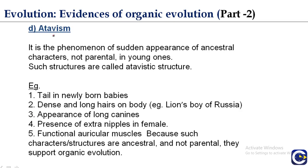Atavism is the phenomenon of sudden appearance of ancestral characters — which are not parental — in young ones. Characters which are not parental but which are ancestral appear suddenly in an organism at the time of birth; these are called atavistic structures. Examples include a tail in newly born babies, dense and long hair on the body, appearance of long canines, presence of extra nipples in females, and functional auricular muscles. Because such characters are ancestral and not parental, they support organic evolution.